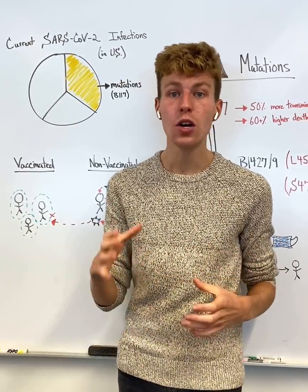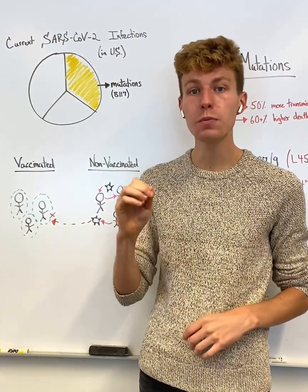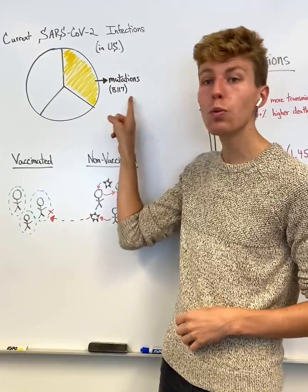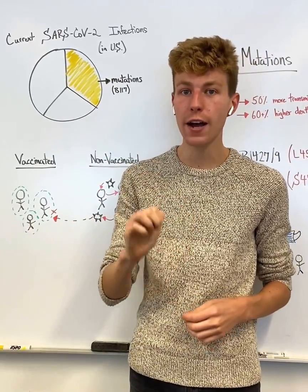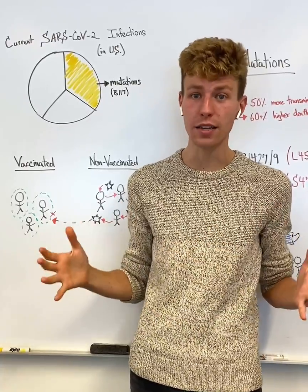Now, if we look at data in the U.S., we see that around one-third of all new cases are related to a specific mutation or variant known as B.1.1.7, which was first identified in the U.K., showing us that these mutations are able to cross borders and span continents.